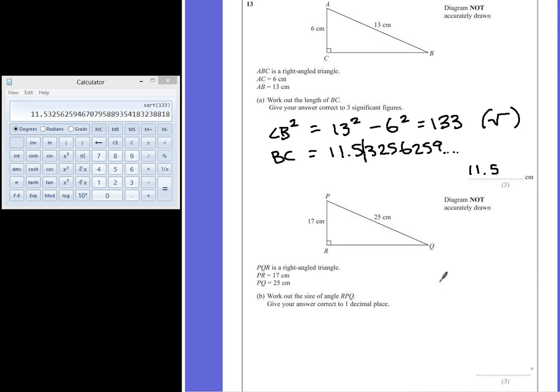Question B asks us to work out the size of angle RPQ. So that's this top angle here. Give your answer correct to one decimal place. Now this time we're not dealing with three sides, so Pythagoras Theorem will not apply.